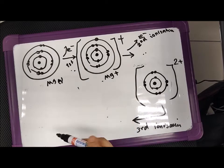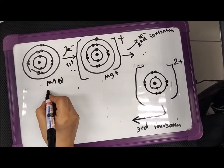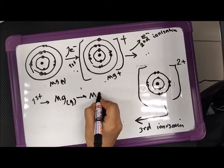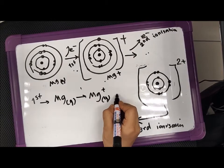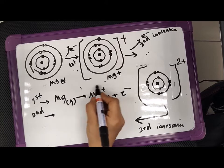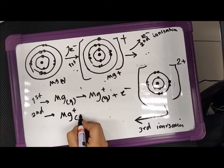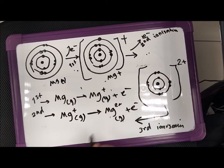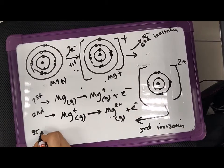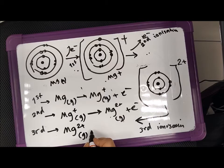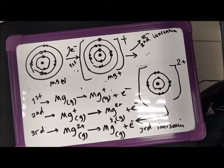Let me write the equations. The first ionization energy: Mg(g) → Mg+(g) + e⁻. The second ionization energy: Mg+(g) → Mg2+(g) + e⁻. For the third ionization energy: Mg2+(g) → Mg3+(g) + e⁻, and it goes on like that. This is called successive ionization energy.